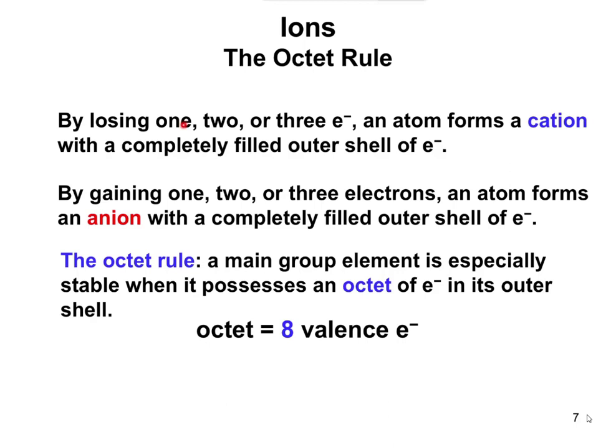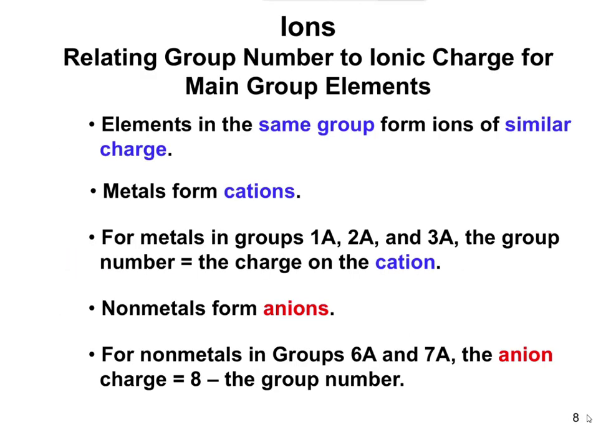By losing 1, 2, or 3 electrons, an atom forms a cation. By gaining 1, 2, or 3 electrons, an atom forms an anion. The goal is to get a completely filled outer shell. Looking at the periodic table, metals form cations and non-metals form anions. For metals in groups 1A, 2A, or 3A, the group number equals the charge. For non-metals, the anion charge is 8 minus the group number.